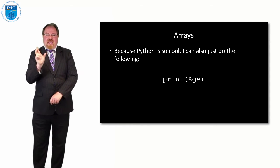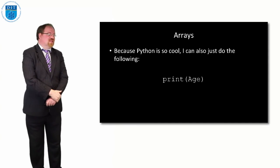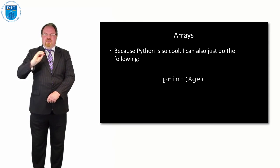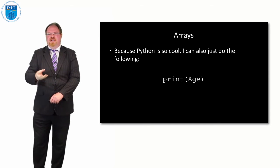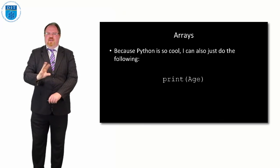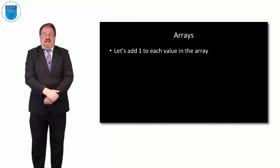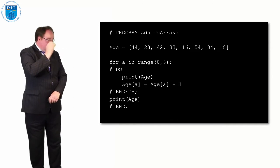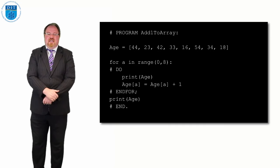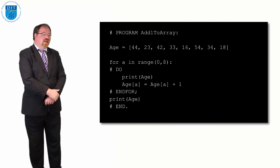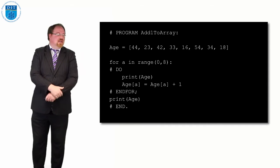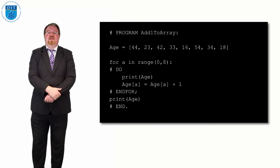Python is neat — if you just say print(age), the name of the array, it'll print out the whole array for you. It's a very clever language, similar to Lisp or Scheme in terms of flexibility for manipulating arrays. If you want to add one to each value, it's very similar to pseudocode: declare the array, then for a in range(0, 8): print the value, add one to it, then print the array at the end to confirm it's all worked.